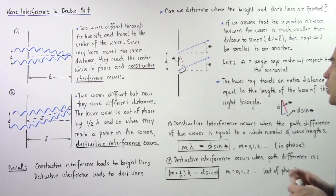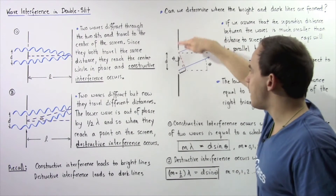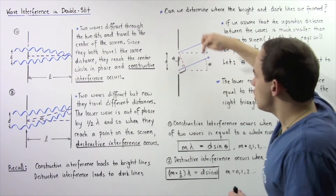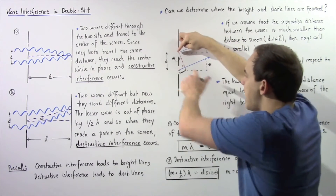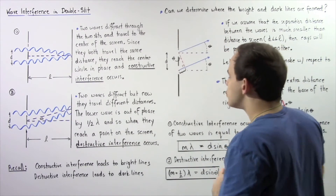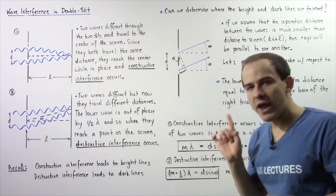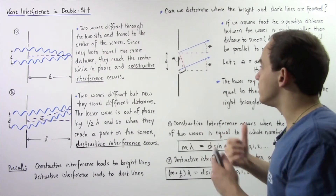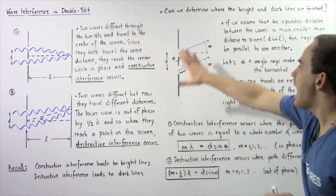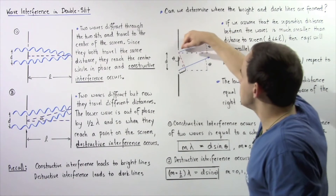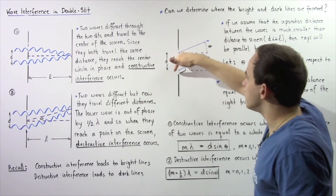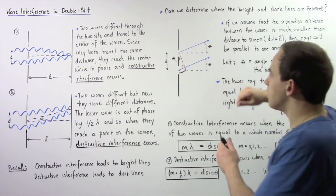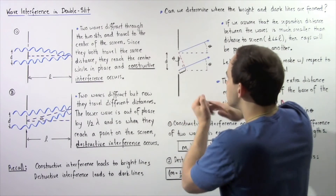Can we determine where the bright and dark lines are actually formed? Let's take the following double slit screen with opening number one and opening number two. We treat the two waves as rays of light, which simplifies our diagram. We have wave number one and wave number two, separated by distance d.